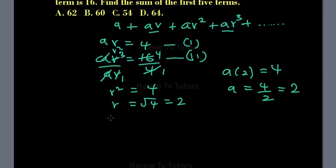So now that we have a as 2, we insert it in the formula of Sₙ equals a times (1 minus rⁿ) divided by (1 minus r).